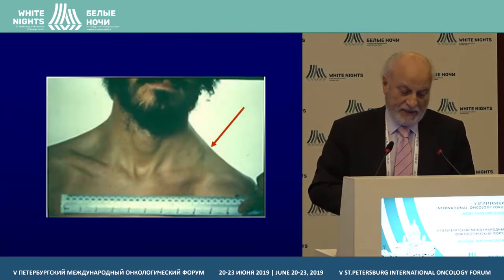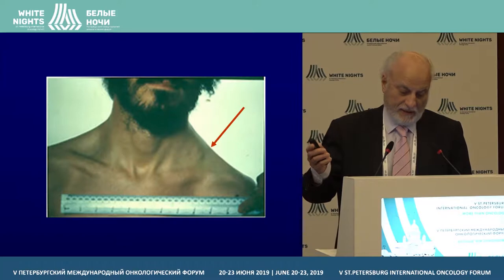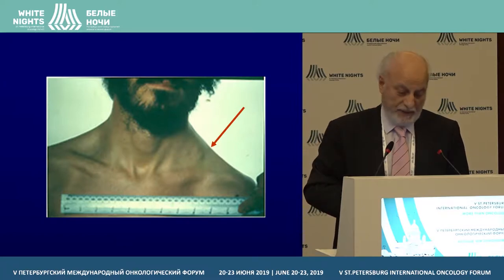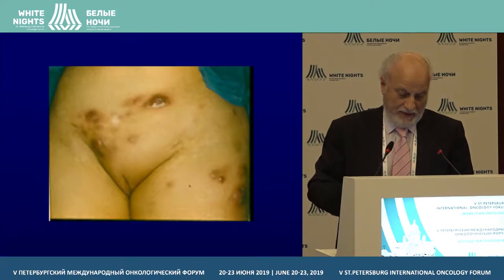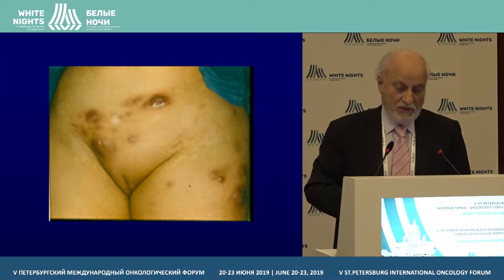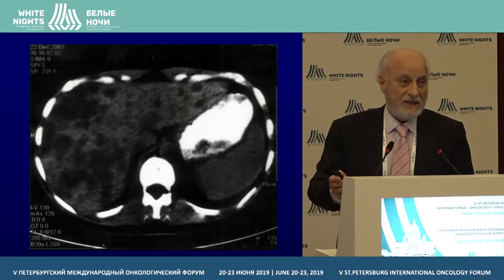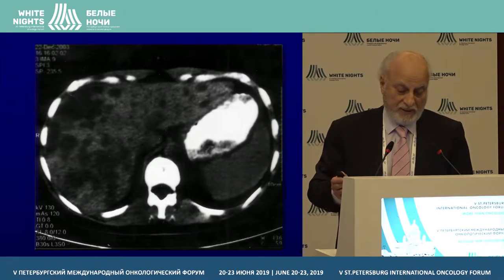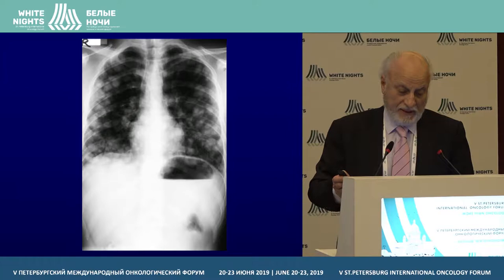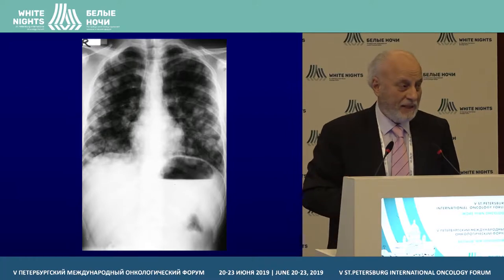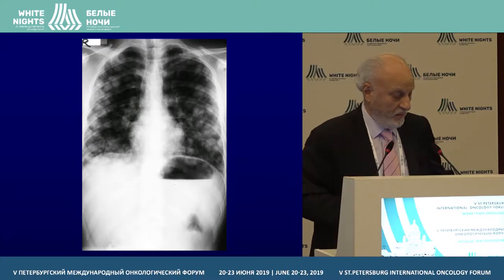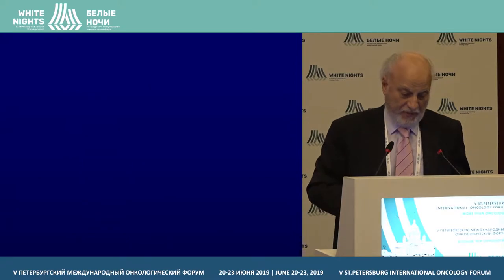Let's see the clinical presentation. This is a classical young man with left supraclavicular lymphadenopathy. This is a lady with subcutaneous nodes without a primary site. A man with a huge liver full of metastatic disease without any primary site, and a young man with bilateral lung metastasis without a primary site.